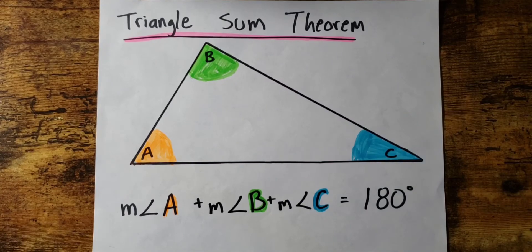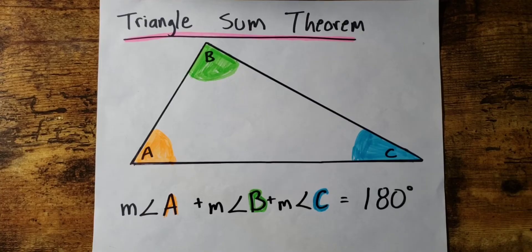Hello everyone, welcome back. In this video we'll be looking at the Triangle Sum Theorem. This is a rule that says that if you add up the interior angles of a triangle, they will always add up to 180 degrees.